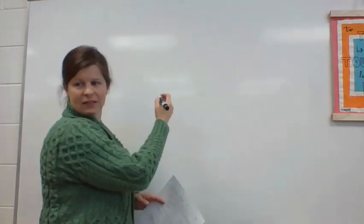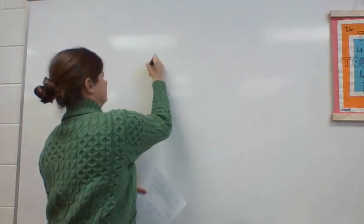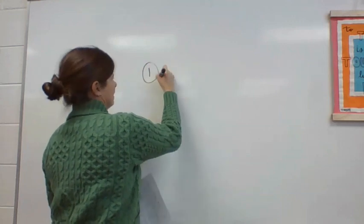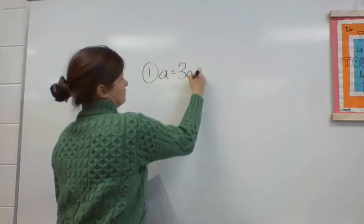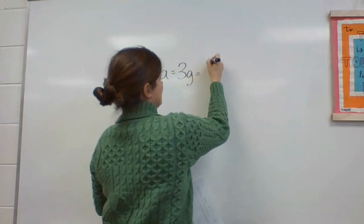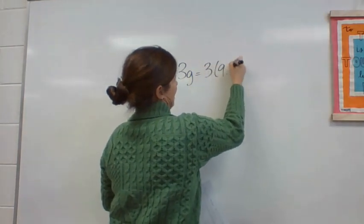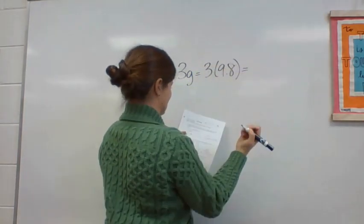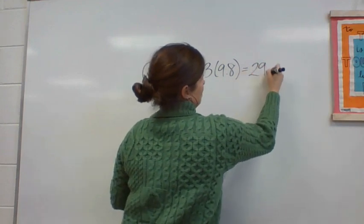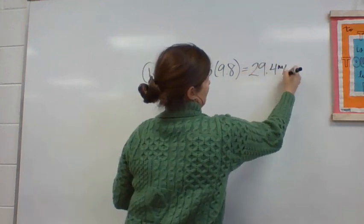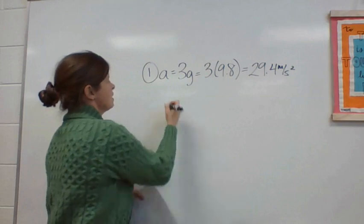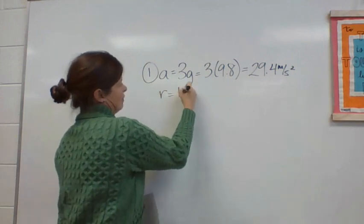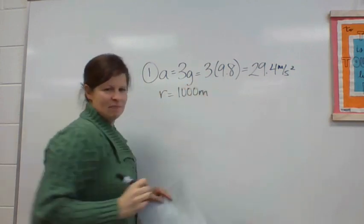So the first thing I'm going to do is list my givens as usual, and they're giving us that A equals 3G, and they told us that that means 3 times 9.8, so I just plug that in, and I get 29.4 meters per second squared. The radius of this is one kilometer, which would be 1,000 meters.